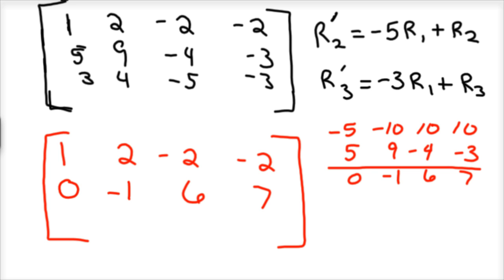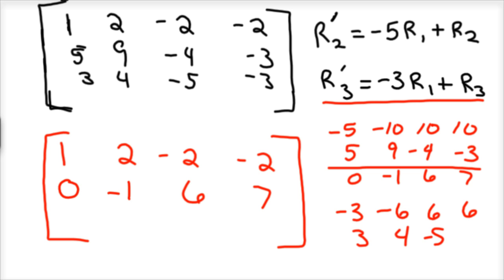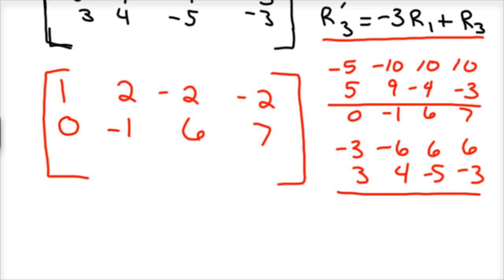Now we'll do new row 3, which is negative 3 times row 1. So that would be negative 3, negative 6, positive 6, positive 6, plus row 3, which is 3, 4, negative 5, negative 3. Add those up and we get 0, negative 2, 1, 3 — which gives us the zero we wanted.